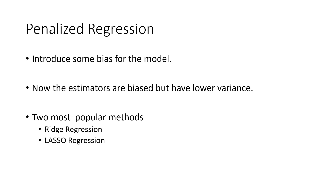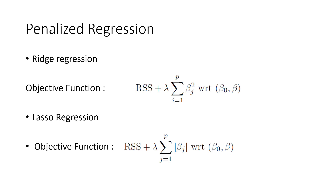There are two most popular penalized regression techniques. The first one is ridge regression and the other one is lasso regression. The main difference in ridge regression is due to the objective function. In ridge regression we have RSS plus a penalty term times the L2 regularization term — this is the L2 norm. In lasso regression, instead of the L2 norm we have the L1 norm, which is equal to the sum of the absolute beta coefficients.